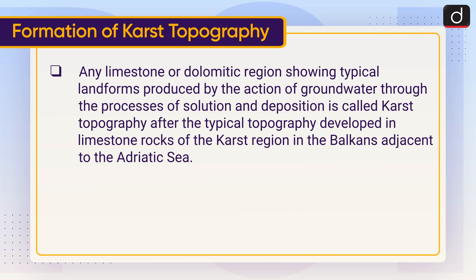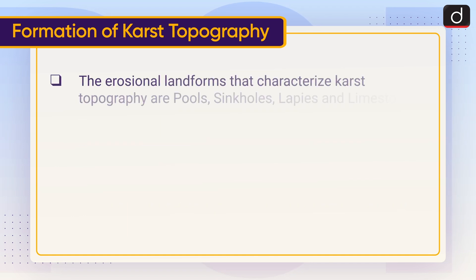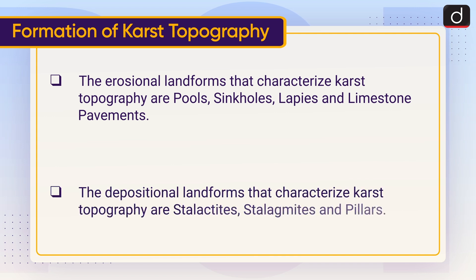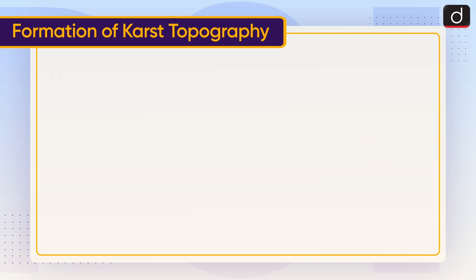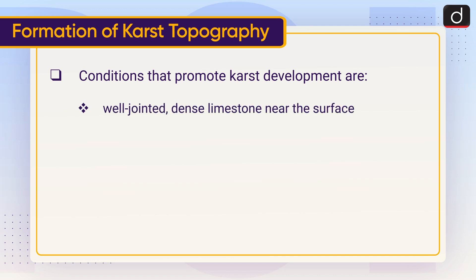Adjacent to the Adriatic Sea, karst topography is characterized by erosional and depositional landforms. The erosional landforms are pools, sinkholes, lapies, and limestone pavements. The depositional landforms are stalactites, stalagmites, and pillars. Conditions that promote karst development are well-jointed dense limestone near the surface, moderate to heavy rainfall, and good groundwater circulation.